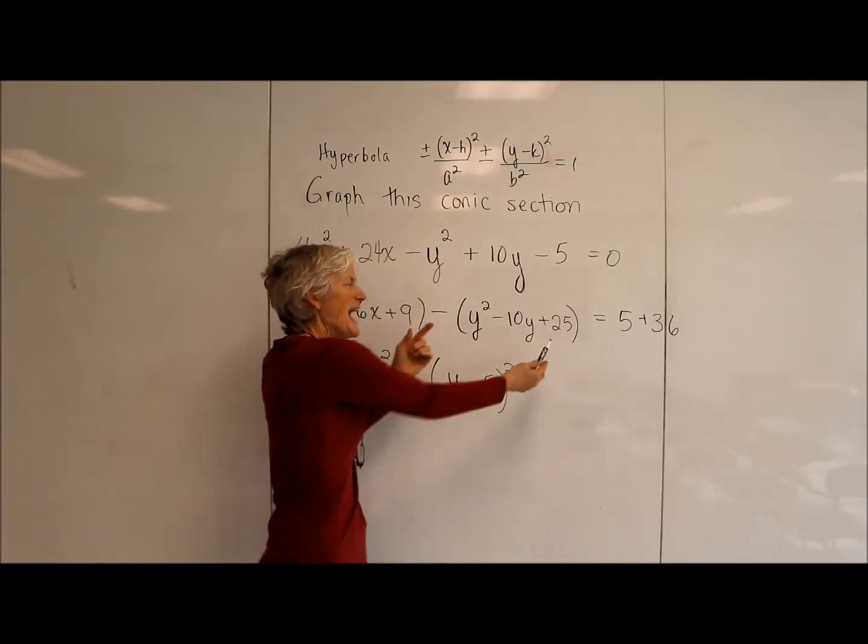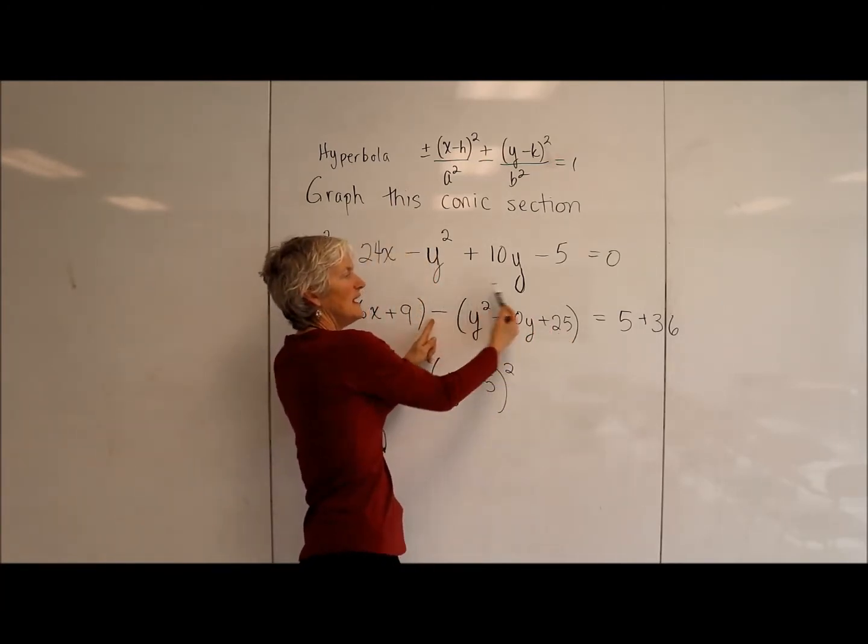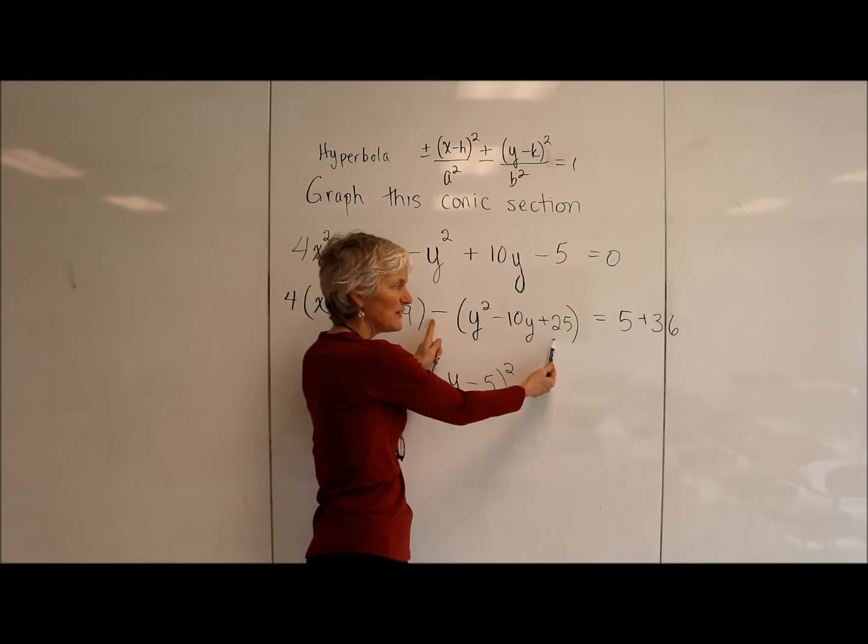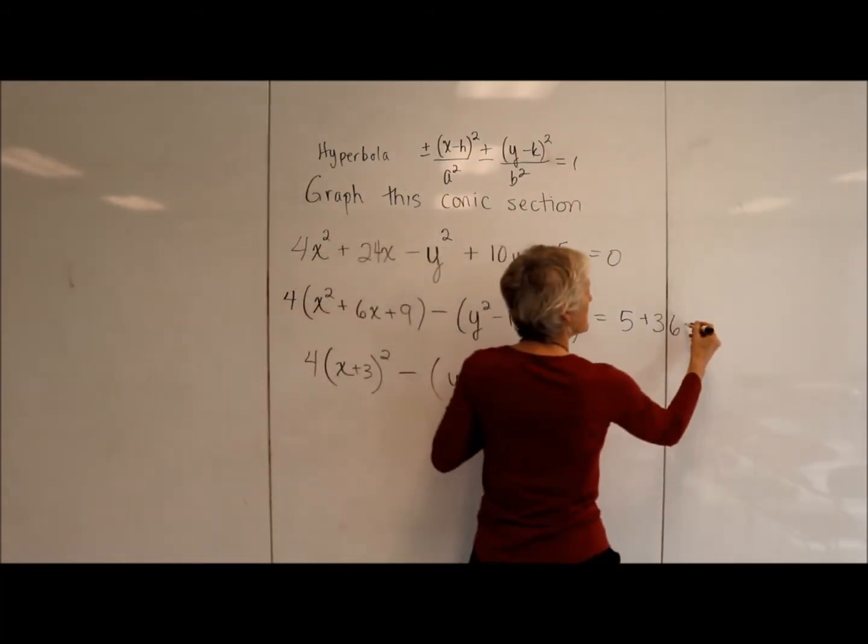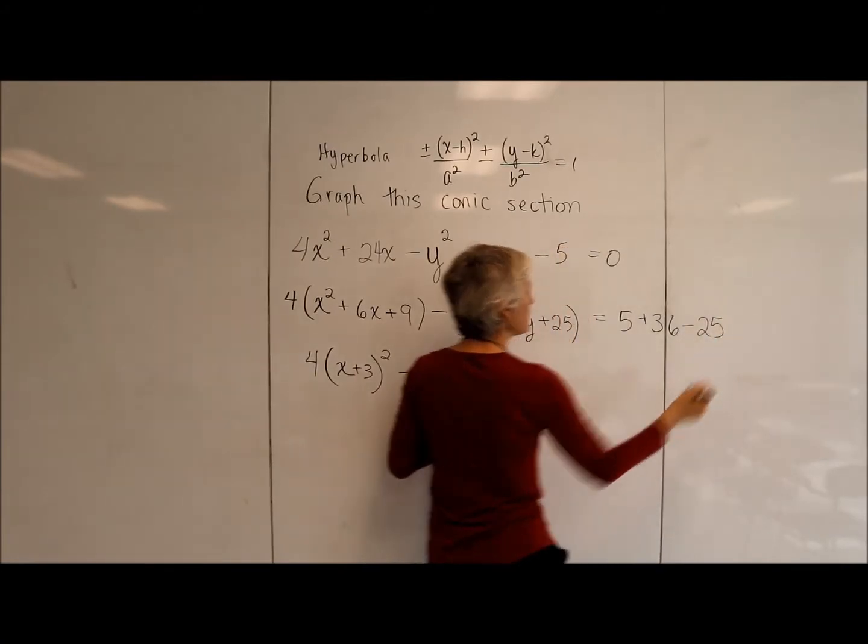Let's think. I didn't really add 25, I actually added a negative 25, subtracted 25. So to keep this equation balanced, I'm going to subtract 25 from that side.